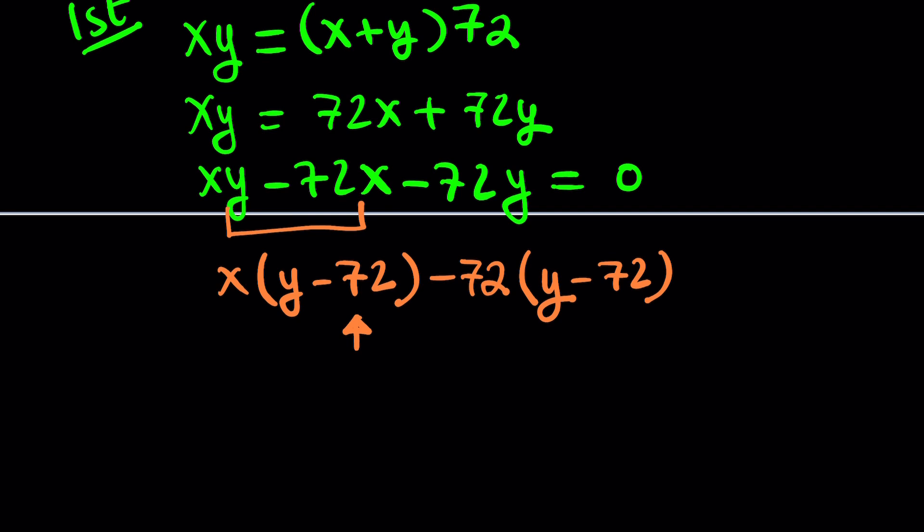Pretend you have the minus 72 there. But that would involve the product of these two things, which is 72 times 72. You can write it as 72 squared for now.